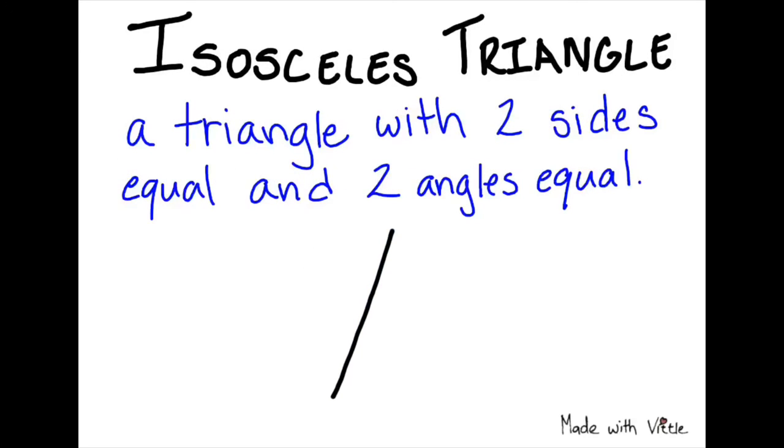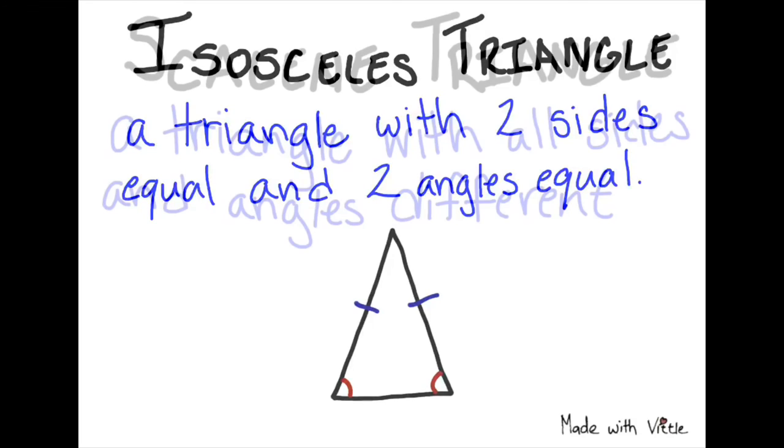Our next type is an isosceles triangle, and this is a triangle with two equal sides and two equal angles. So one less than the equilateral. Two equal sides marked with dashes and two equal angles marked with red curves.